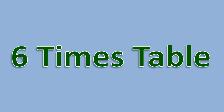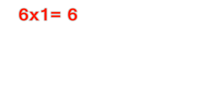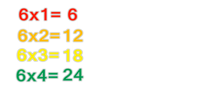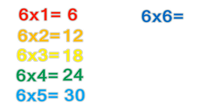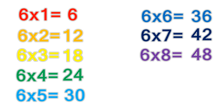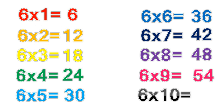6 times table. 6 times 1 equals 6. 6 times 2 equals 12. 6 times 3 equals 18. 6 times 4 equals 24. 6 times 5 equals 30. 6 times 6 equals 36. 6 times 7 equals 42. 6 times 8 equals 48. 6 times 9 equals 54. 6 times 10 equals 60.